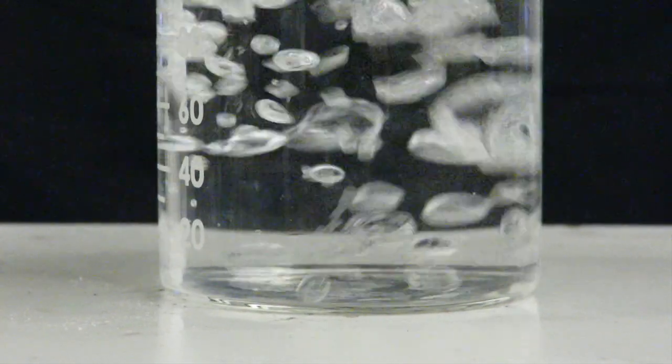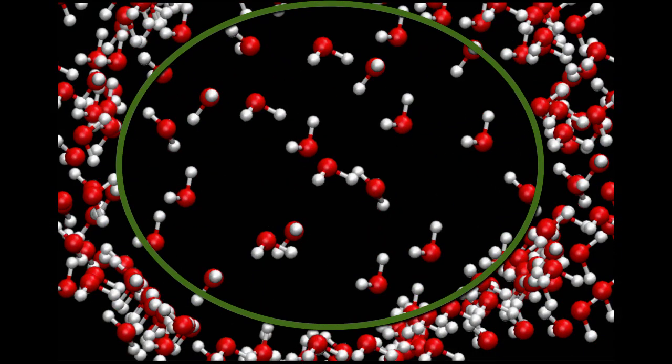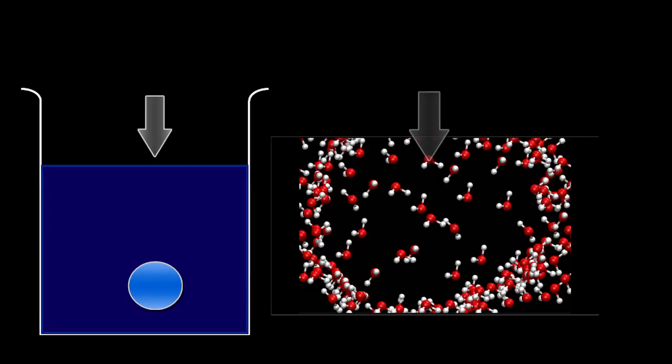So back to boiling. Boiling happens when water molecules have enough energy to spread out and form bubbles. These bubbles rise to the surface and release the water vapor. Since the water vapor contains these more energetic molecules, releasing them into the air cools the water. So here we have our beaker with a bubble.